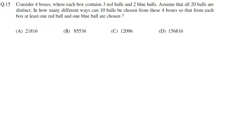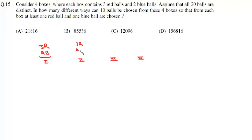In question number 15, we have 4 boxes and each box contains 3 red and 2 blue balls. So we have 4 boxes: box 1, box 2, box 3, and box 4. Each of these contains 3 red and 2 blue balls.